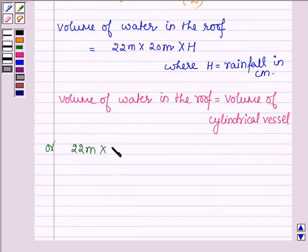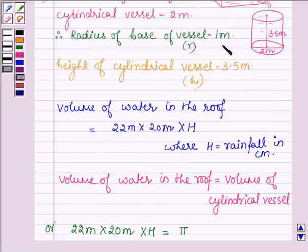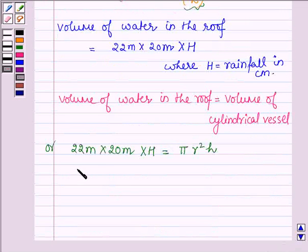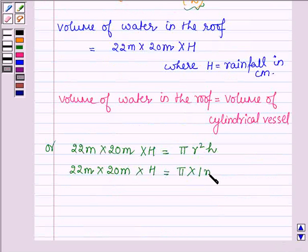So we have: 22 meters × 20 meters × h equals the volume of the cylindrical vessel, which is given by π r² h, where r is 1 meter and h is 3.5 meters. So we have 22 × 20 × h = π × 1² × 3.5.